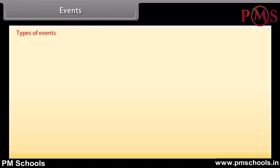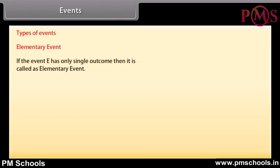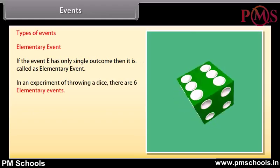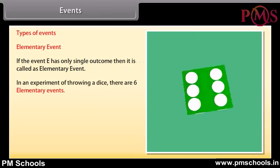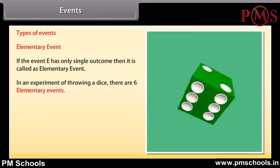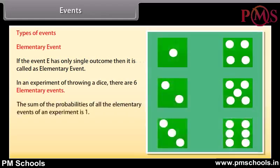Types of Events. Elementary event: If the event E has only a single outcome, then it is called an elementary event. In an experiment of throwing a dice, there are 6 elementary events. The sum of the probabilities of all the elementary events of an experiment is 1.